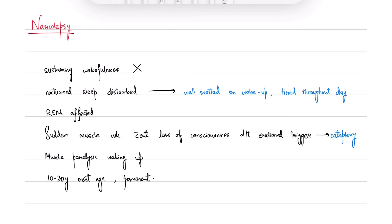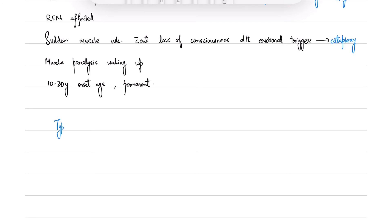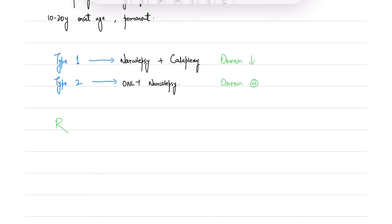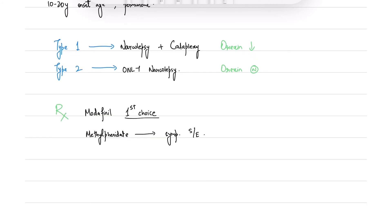Narcolepsy typically starts between ages 10 and 20, and once established, it persists for life. Narcolepsy has two types: Type 1 is narcolepsy with cataplexy, while Type 2 is only narcolepsy. Type 1 will have low levels of orexin, while in Type 2, orexin levels will be normal. Treatment is modafinil. Methylphenidate or dextroamphetamines are associated with sympathomimetic side effects but are as effective. Cataplexy is controlled with antidepressants like venlafaxine and duloxetine.